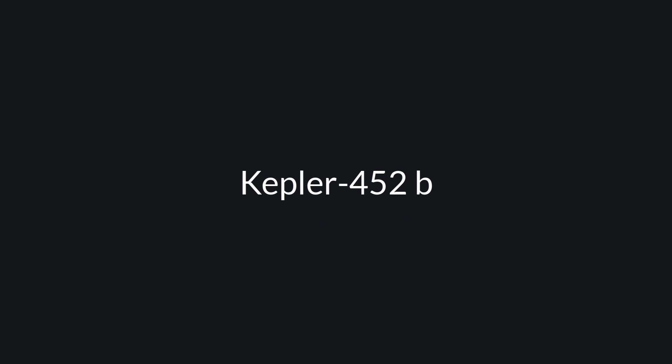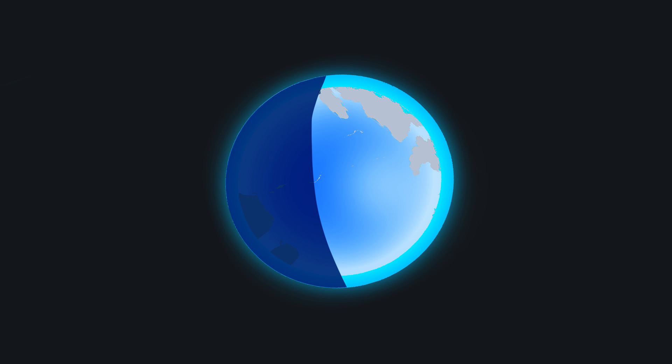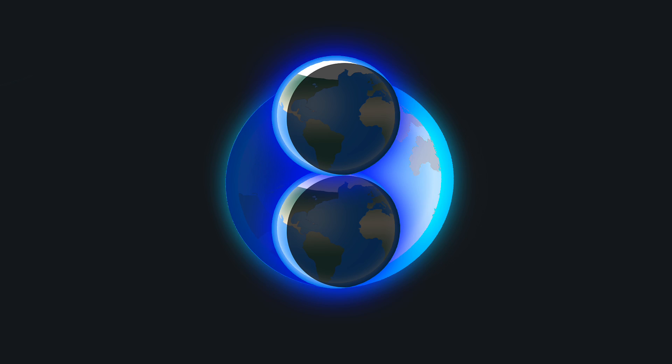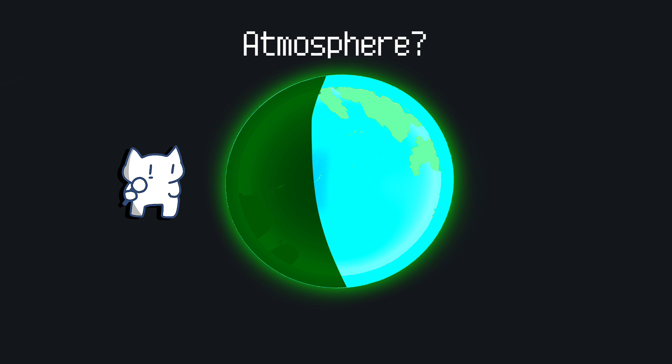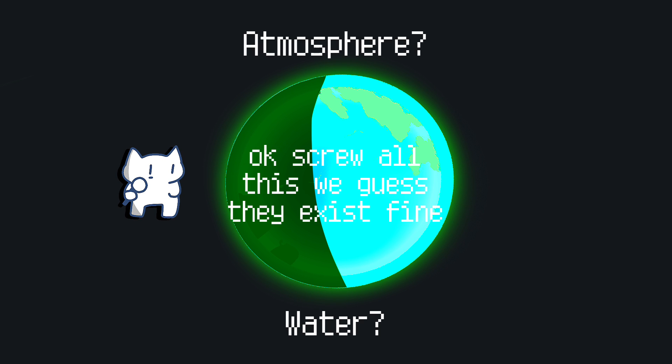Kepler-452b. Dubbed Earth's cousin, Kepler-452b orbits a star similar to our Sun. However, its larger size and uncertain atmosphere could mean it's more of a distant relative. The habitability of Kepler-452b hinges on several factors, including its atmospheric conditions and the existence of water, that remain largely unknown.